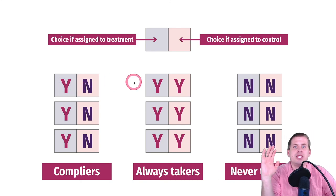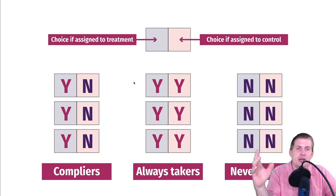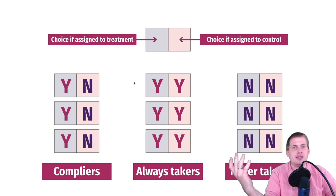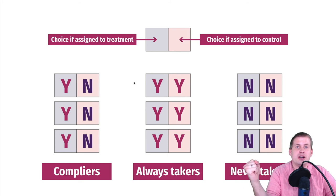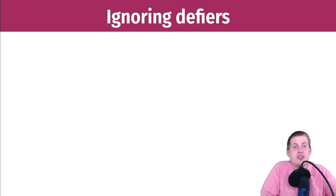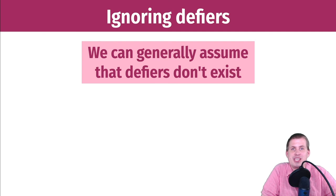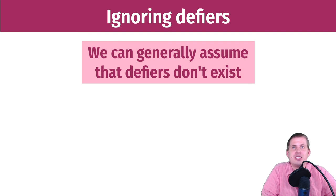To make the math of compliance work, in causal inference we assume there are no defiers — we ignore them. That's a fairly safe assumption. In a medical drug trial, a defier assigned to control would have to break into the lab and steal the medicine. With a bed net RCT, a defier assigned to treatment would have to rip down existing bed nets out of spite. So we can generally assume defiers don't exist.